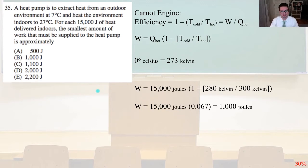The efficiency equals 1 minus the temperature of the cold minus the temperature of the hot equals the work over the heat of the hot. So from there, we can arrive to work equals Q hot times the quantity 1 minus the quantity T cold divided by T hot. So we have to remember 0 degrees Celsius equals 273 degrees Kelvin. So from there, we can plug in what the work would be is 15,000 joules times the quantity of 1 minus 280 Kelvin over 300 Kelvin, and that equals 1,000 joules. That is answer B.